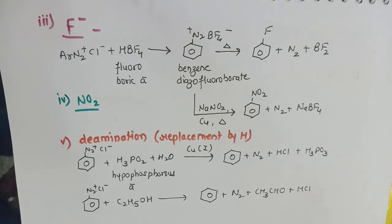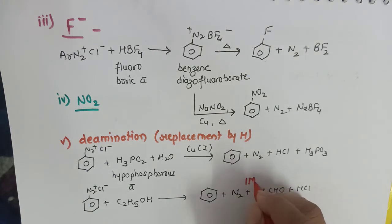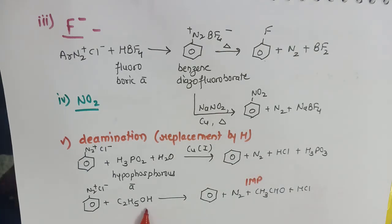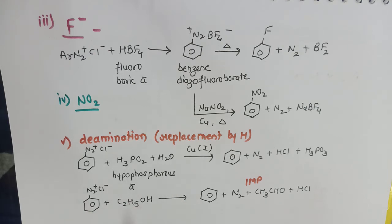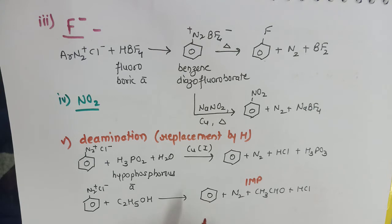This ethanol reaction is marked as important. As soon as students see ethanol here, they incorrectly write the product as phenol — that is completely wrong. When we treat BDC with ethanol we get benzene, not phenol. These reactions are also important from the perspective of conversions, as the benzene produced can be subjected to any further reaction to get the required product.